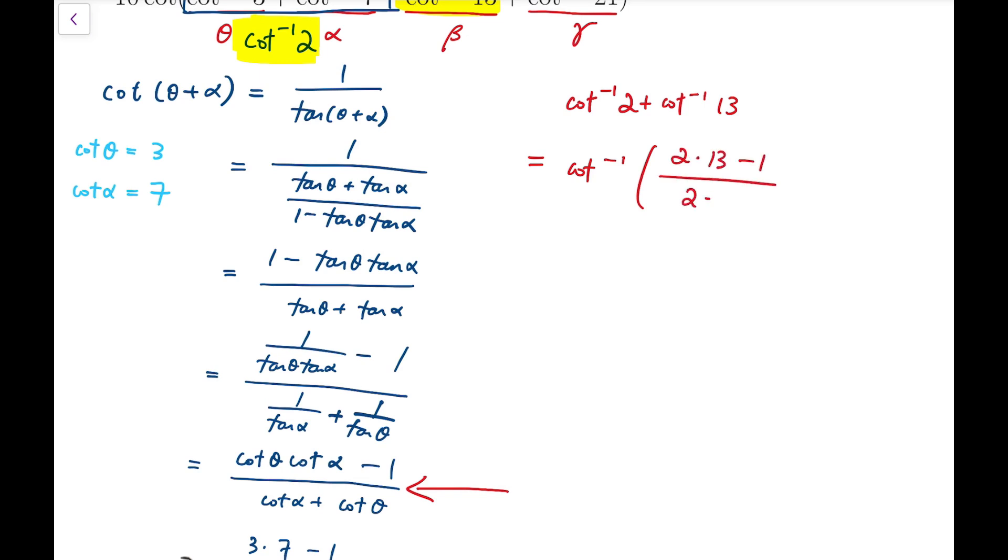as 2 times 13 minus 1, all divided by 2 plus 13. So it's arccot tangent of 5 over 3.